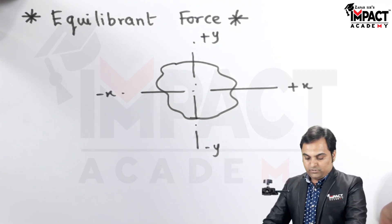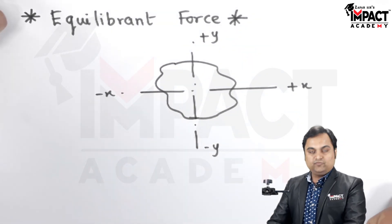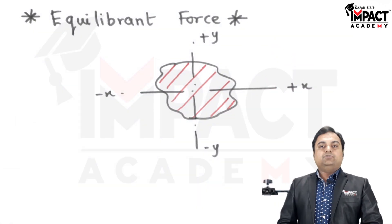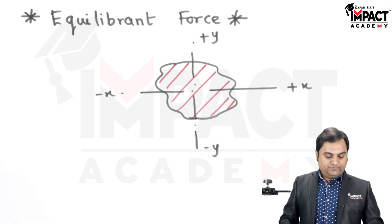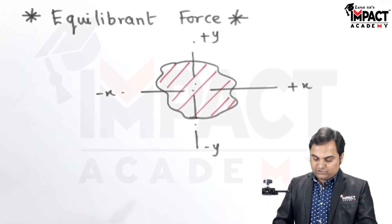Now there is a resultant force which would be acting on this body and resultant force is the disturbing force. That is, when the resultant is present the body will try to move in the direction of the resultant force.